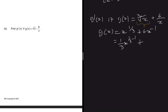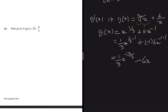So after writing it in standard form, you can then differentiate using the power rule. We're going to get 1 over 3 times x to the power 1 over 3 minus 1, plus 6 times minus 1 times x to the power minus 1 minus 1. So that gives us 1 over 3 times x to the power minus 2 over 3, and then plus times minus gives minus 6x to the power minus 2.